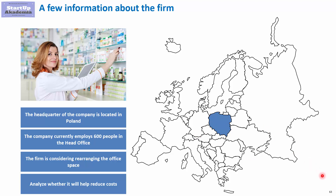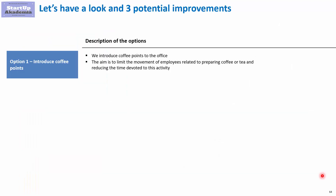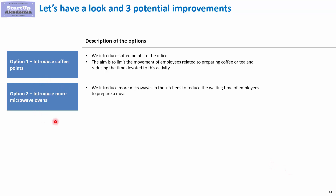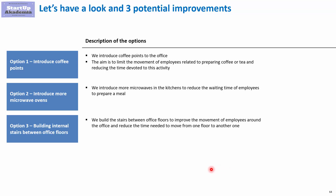We will consider three potential improvements. First, we introduce coffee points, since everyone currently has to go to the main kitchen to prepare coffee or tea. Second, we want to introduce microwave ovens to help with lunches, as they appear to be a bottleneck. Third, we will consider internal stairs between office floors, since many people spend a lot of time using the elevator to move between floors of cooperating departments.